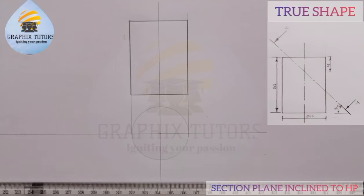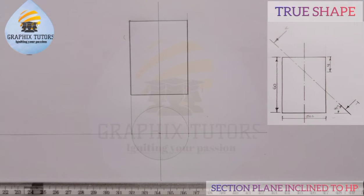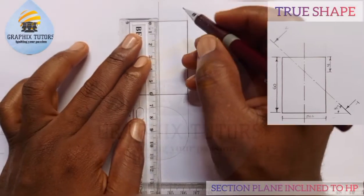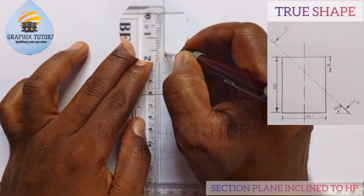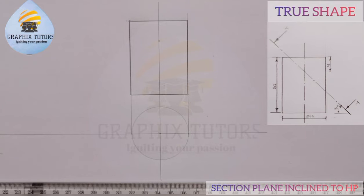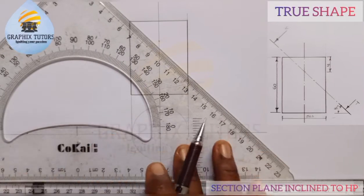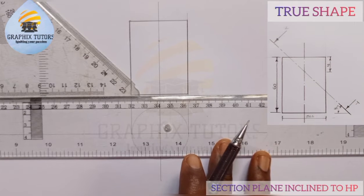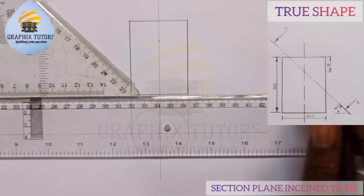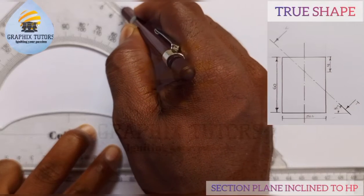Now we are told that the section plane is at an angle of 45 degrees to the horizontal, passing through a point 16 millimeters from the top. So I'm going to measure 16 millimeters from the top — from zero to this point here is 16. You can see that point is where my cutting plane is. I'll take it to pass through that point at 45 degrees to the horizontal. Through this point I'm going to draw my cutting plane.